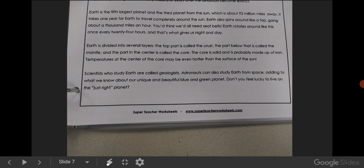Earth is the fifth largest planet and the third planet from the sun, which is about 93 million miles away. It takes one year for Earth to travel completely around the sun. Earth also spins around like a top, going about a thousand miles an hour. You'd think we'd all need seat belts. Earth rotates around like this every 24 hours, and that's what gives us day and night.